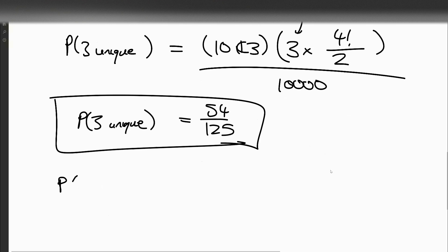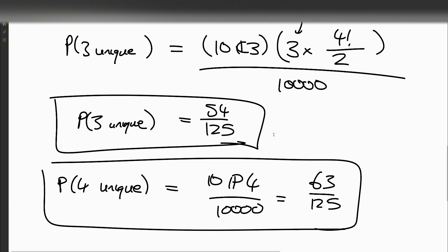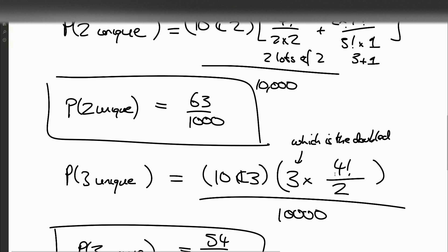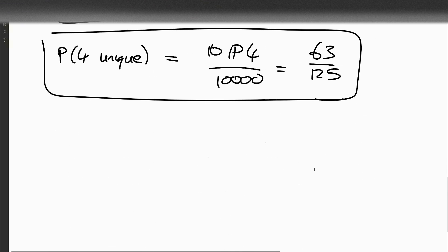Now what about four unique? The probability of four unique is just the ways of permuting four out of ten, so it's just ten P four over ten thousand. Ten P four divided by ten thousand is sixty-three over one hundred and twenty-five. So now let's just check that these add up to the right thing: fifty-four over one hundred and twenty-five, plus sixty-three over one hundred and twenty-five, plus sixty-three over one thousand, plus one over one thousand. And this adds up to one, so we can be happy with that.